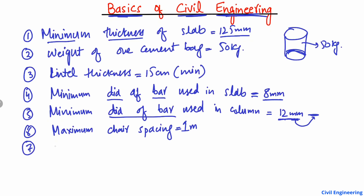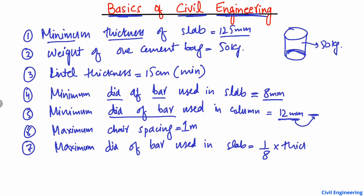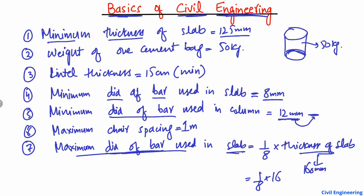The seventh point is the maximum diameter of bar used in a slab, which is equal to 1/8 of the thickness of the slab. For example, if the thickness of the slab is 160 millimeters, the maximum bar diameter is 1/8 × 160 = 20 millimeters. So the maximum bar diameter you can use in that slab is 20 millimeters.